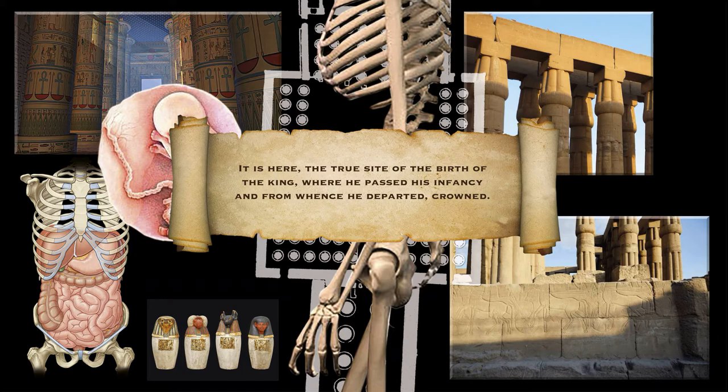'The true site of the birth of the king, where he passed his infancy, and from whence he departed crowned.' It's a very interesting thing about the womb and the umbilical cord, because the Egyptians understood that the human has the possibility of two births — the first from the womb of our biological mother, but the second from our mother the planet. The first gives birth to us physically, the second electrically.